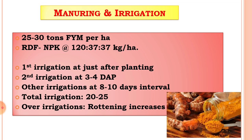After that, chemical fertilizers are applied — that is the recommended dose of fertilizer (RDF). The dose is 120 kg Nitrogen, 37 kg Phosphorus, and 37 kg Potassium per hectare.